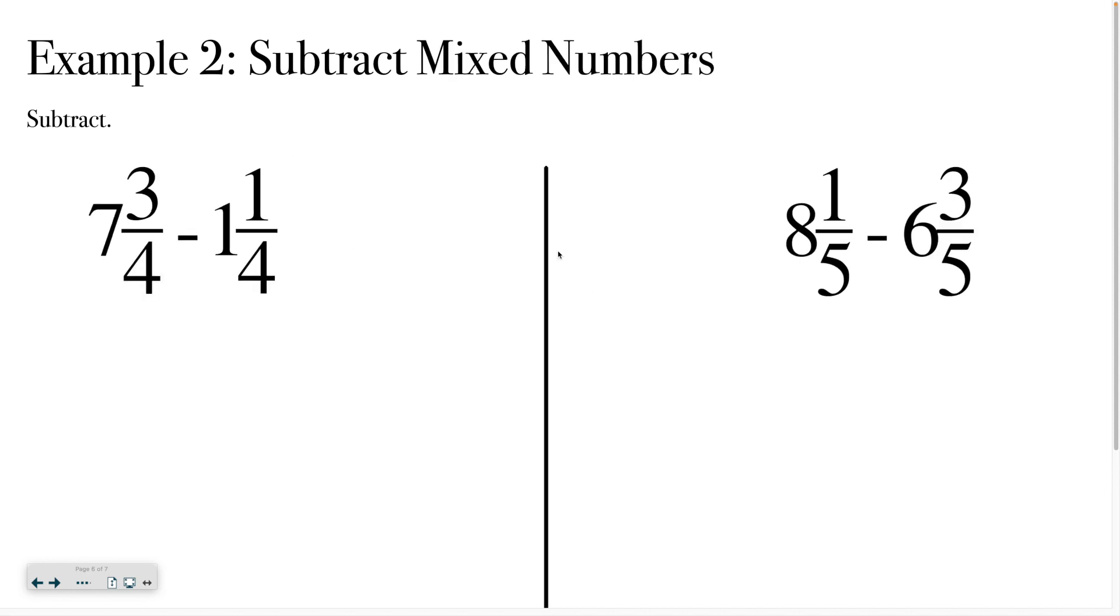Alright, let's try subtracting some mixed numbers now. So, you can see I have 7 and 3 fourths minus 1 and 1 fourth. So, I'm going to show you two different ways to solve these problems. So, when you have all of the big numbers listed first. So, you can see 7 is bigger than 1. And 3 is bigger than 1. When that happens, things are pretty straightforward. You just treat it like you did your addition. So, I would do 6 minus 1 is 5. 3 fourths minus 1 fourth is 2 fourths. And then I would simplify that 2 fourths by dividing the top and bottom by 2. And I would get 1 half. So, that would be my answer there.